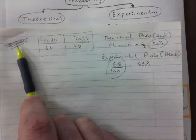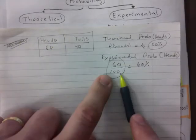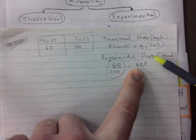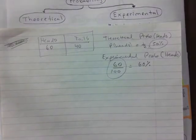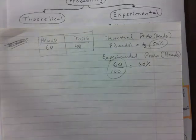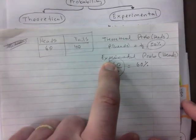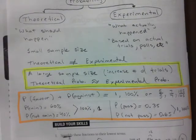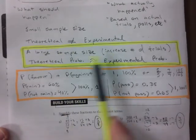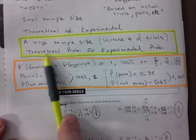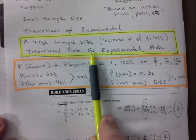The answer should always be: you haven't performed enough experiments. If you were to toss it a thousand or fifteen hundred times, the experimental probability should get closer and closer to fifty percent — that's just how it works, unless the coin is rigged or heavier on one side. Small sample size means they're usually not the same, but a large sample size will make the two very close.